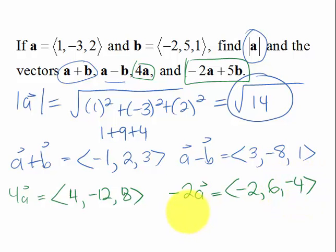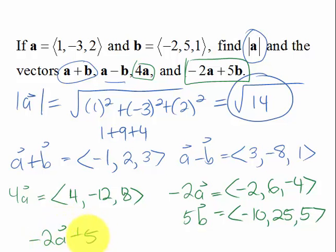And then we're going to be adding that to 5B. So 5B is going to be 5 times each of the components of B. So that's going to be negative 10, 25, and 5. So if we did negative 2A plus 5B,